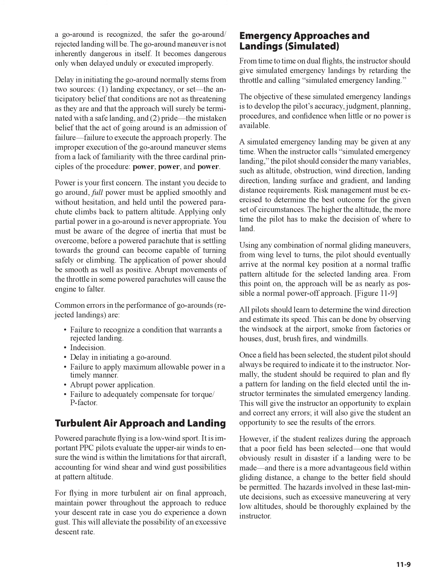Risk management must be exercised to determine the best outcome for the given set of circumstances. The higher the altitude, the more time the pilot has to decide where to land. Using any combination of normal gliding maneuvers, from wing level to turns, the pilot should eventually arrive at the normal key position at a normal traffic pattern altitude for the selected landing area. From this point on, the approach will be as nearly as possible a normal power-off approach (Figure 11-9). All pilots should learn to determine the wind direction and estimate its speed by observing the windsock at the airport, smoke from factories or houses, dust, brush fires, and windmills.